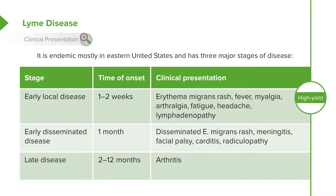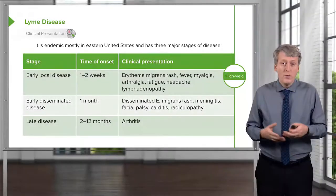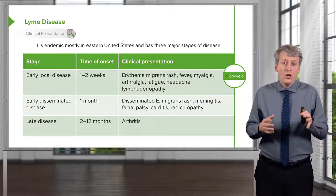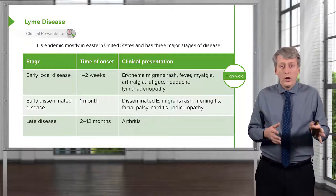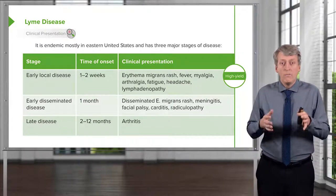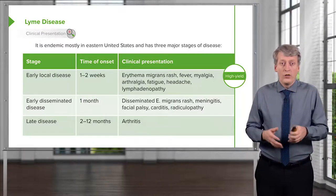Lastly, there's late stage disease. This usually happens between 2 and 12 months later, so ironically it can show up in the winter when you don't think of seeing any ticks. This is usually just the arthritis of the disease, which is a polyarticular or monoarticular migrating arthritis.